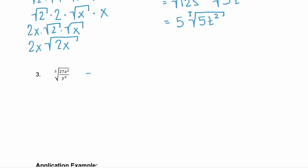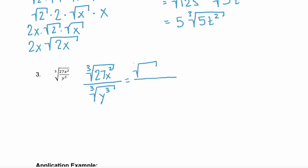We would have the cube root of 27x squared over the cube root of y cubed. Then we can break the numerator up — the cube root of 27 times the cube root of x squared, still over the cube root of y cubed.